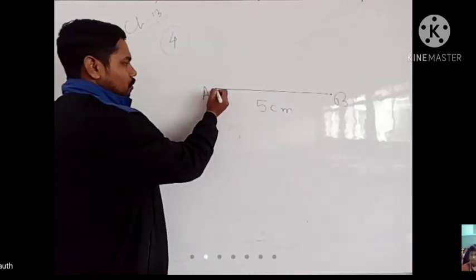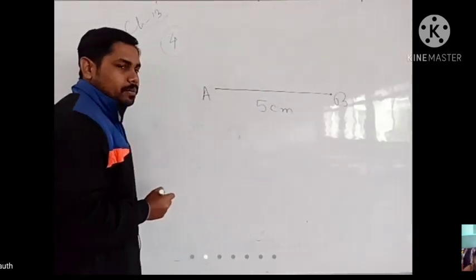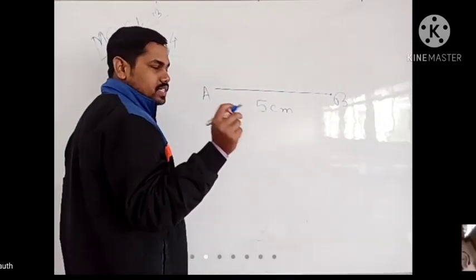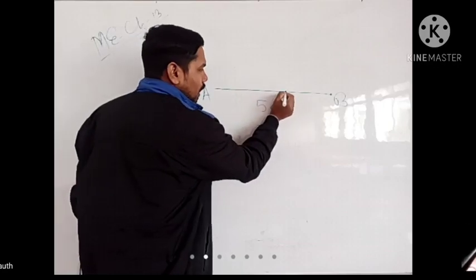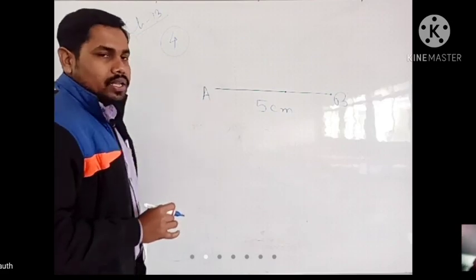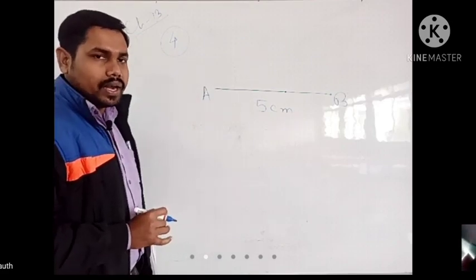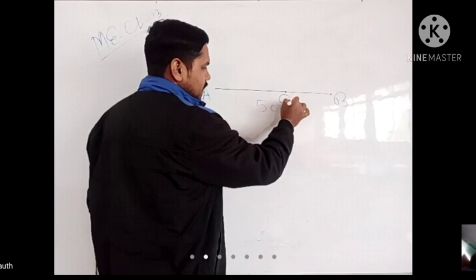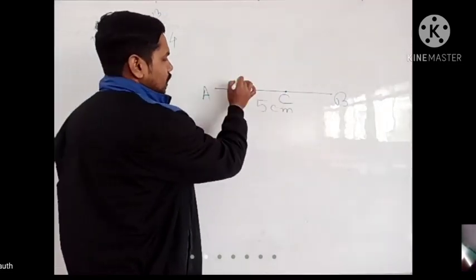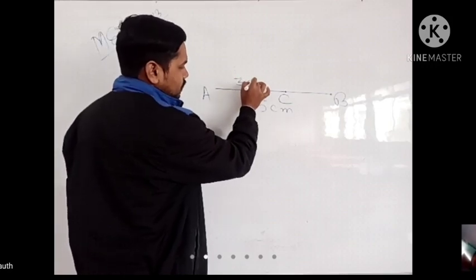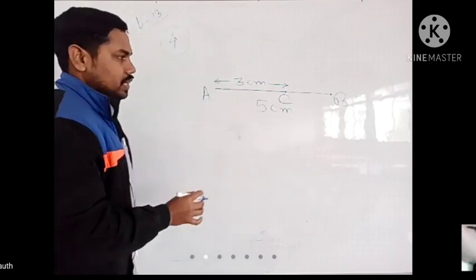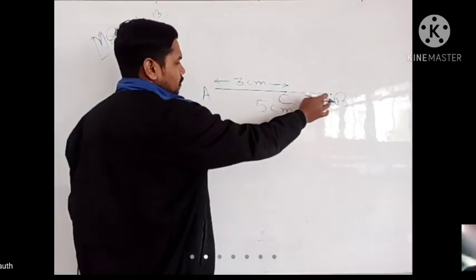So, now you have to give a point named C. This ka name C dhena padeega. Toh yeh hamare AC ka jo length hoga, that will be 3 cm. Yeh length jo hai, yeh 3 cm hoga. So what do you think that CB will be? What will be the length of CB then?